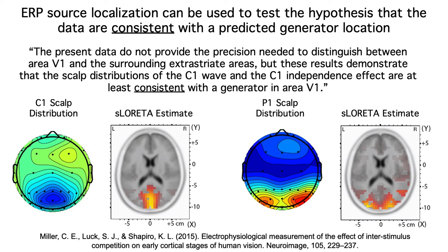The bottom line is that the ERP technique is not well suited for answering questions about neuroanatomy. Its strength is temporal resolution, and the highest impact ERP studies take advantage of this strength and avoid the weakness of poor spatial resolution.